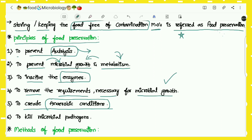The last principle is to kill microbial pathogens — that is, to totally eliminate the microbial pathogens. Pathogens are microorganisms or organisms which can cause diseases. So the final principle is to kill these microbial pathogens.